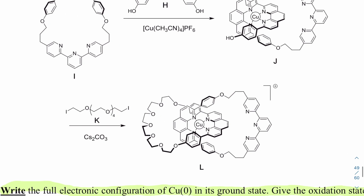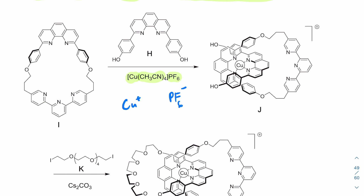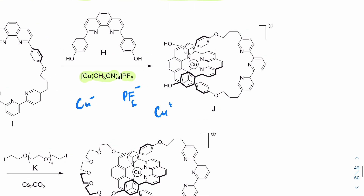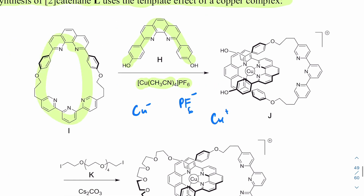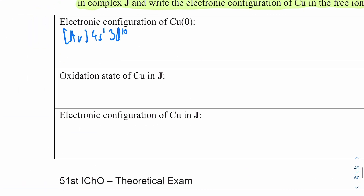For the oxidation state of copper in J: acetonitrile is a neutral ligand, so it contributes zero charge. PF₆⁻ is a one-minus ion, so copper must be one-plus. Double-checking: the ligand charges are both zero and the overall complex charge is plus one, confirming copper is +1, written as Cu(I). The electronic configuration of copper in J removes the easiest electron — the 4s¹ — leaving [Ar] 3d¹⁰.